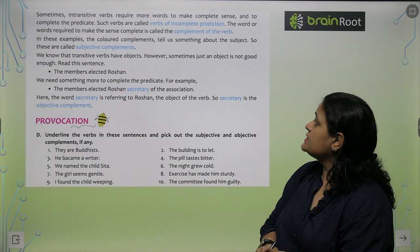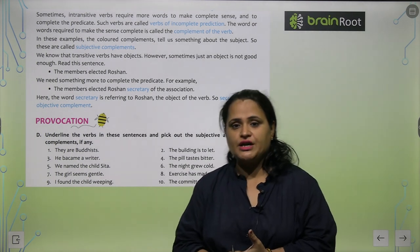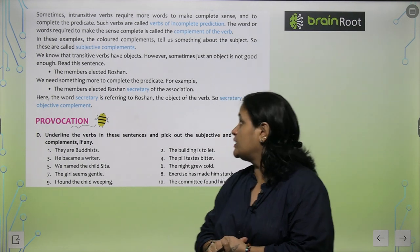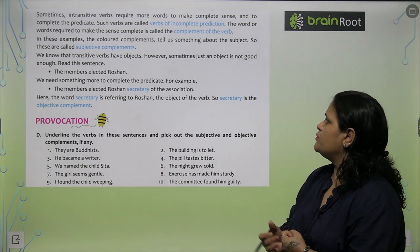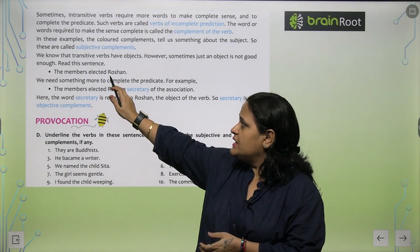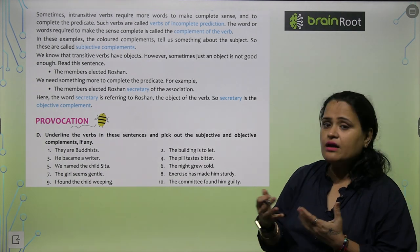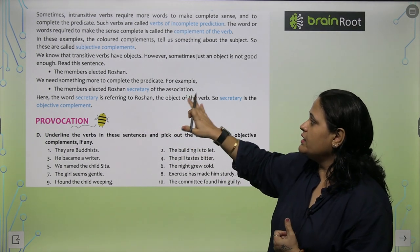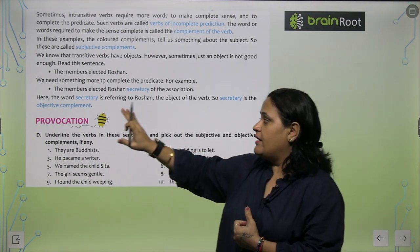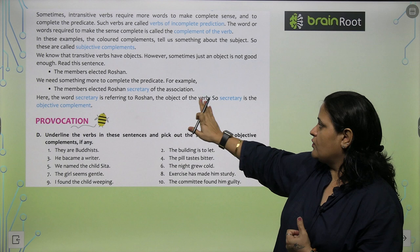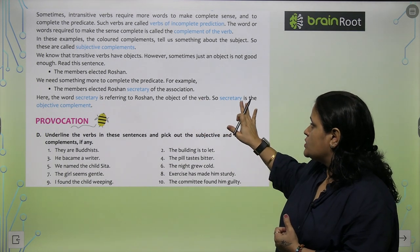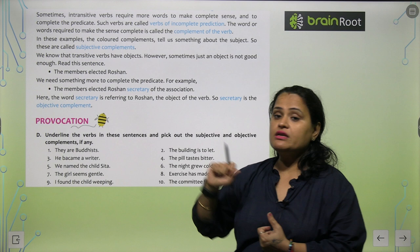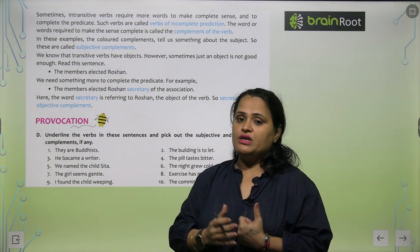In these examples the colored complements tell us something about the subject, so these are called subjective complements. We know that transitive verbs have objects. However, sometimes just an object is not good enough. Jaise ke the members elected Roshan kya? We need something more to complete the predicate. The members elected Roshan secretary of the association. Here the word secretary is referring to Roshan, the object of the verb. So secretary is the objective complement. Kyu ki wo object is Roshan aur secretary kisko define kar raha hai Roshan ko, so ye kya hua, objective complement.